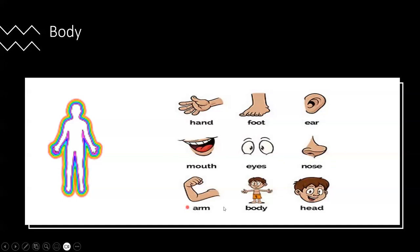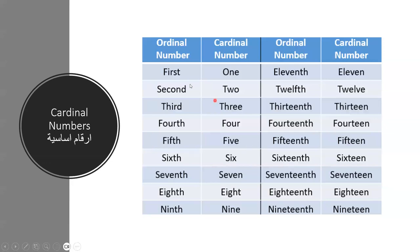What is the cardinal number? The cardinal number means 1, 2, 3, 4, 5, 6, 7, 8, 9, 11, 12, 13, 14, 15, 16, 17, 18, 19, 20, 21, 22, 23. These are the cardinal numbers. And the ordinal numbers are: first, second, third, fourth, fifth, sixth, seventh, eighth, ninth, 11th, 12th, 13th, 14th, 15th, 16th, 17th, 18th, 19th.